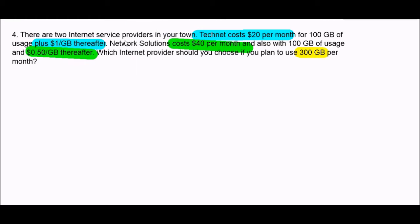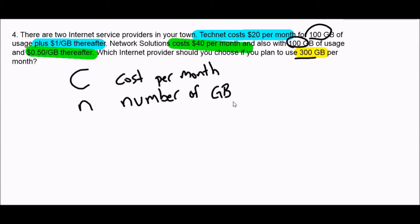So we need to create some equations from the information here so that we can compare the equations. So what we have is two different companies, TechNet and Network Solutions, and both of which have a cost per month. So C is going to be the cost per month. That's something I don't know. And what does it depend on? The cost per month depends on how many gigabytes I use. So I'm going to use N for the number of gigabytes used, but be careful, past the 100 that I get as a basic. So it's the number of gigabytes beyond 100 used per month.